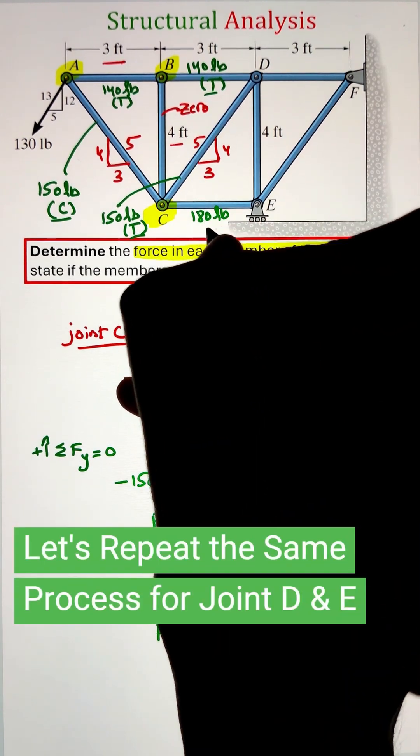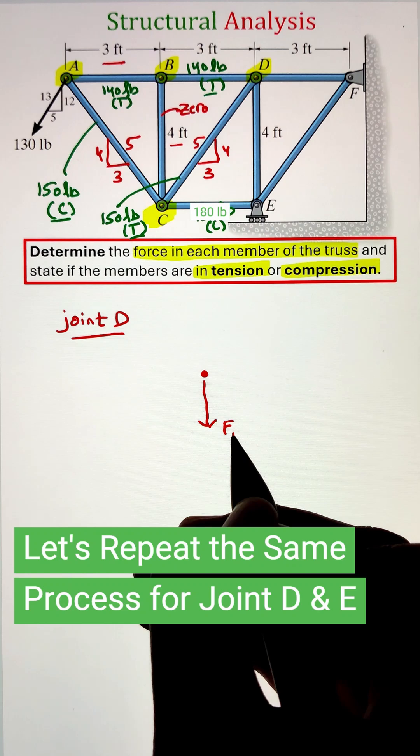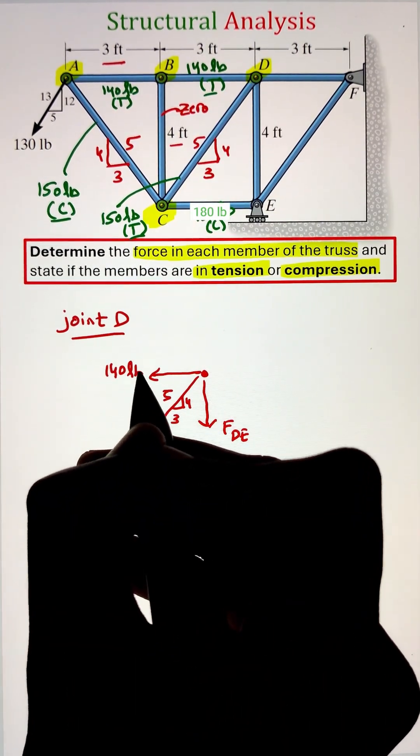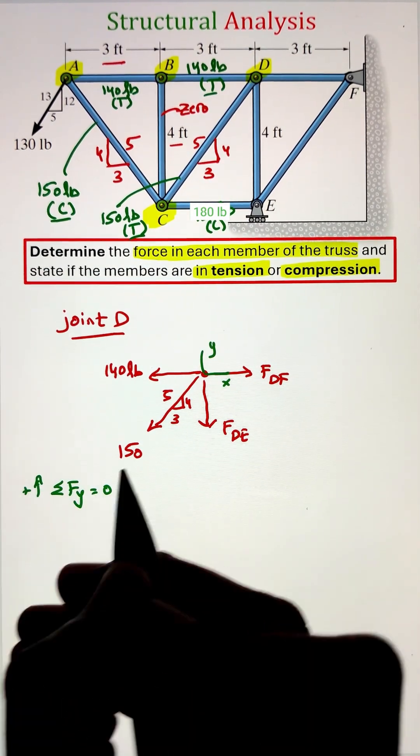Next, let's move to joint D. Here you can see it is connected to four members. Whenever we are selecting the joint, we have to make sure it has no more than two unknowns because we only have two equilibrium equations to solve for these unknowns.